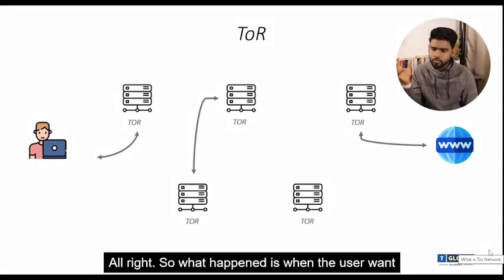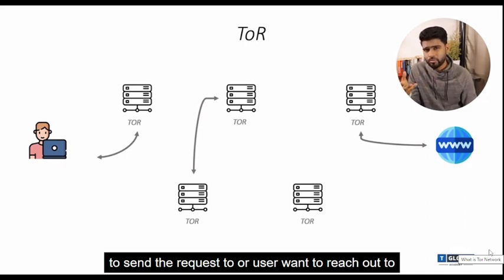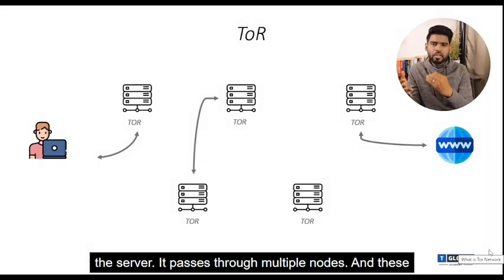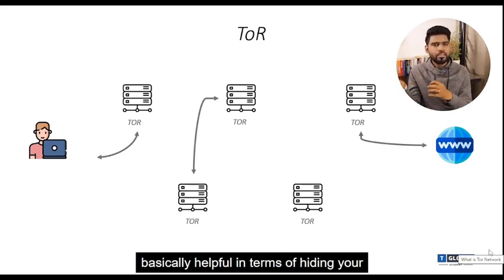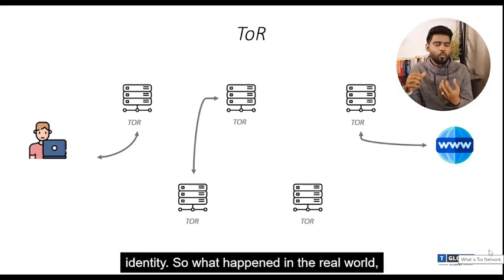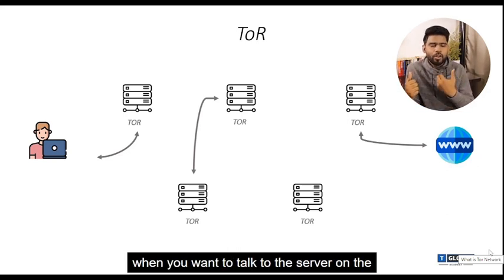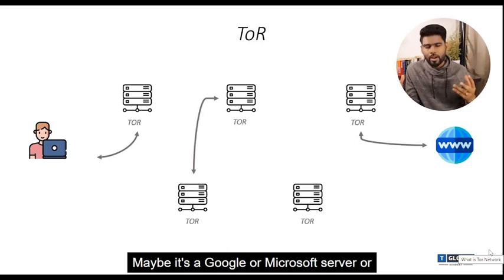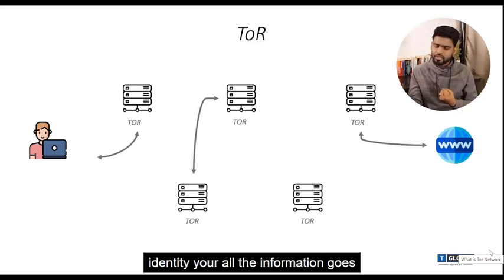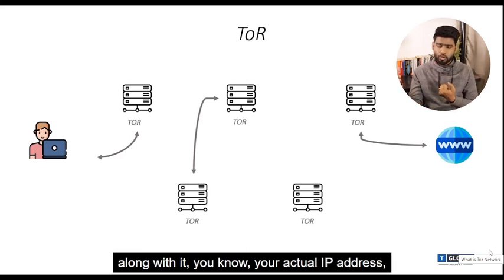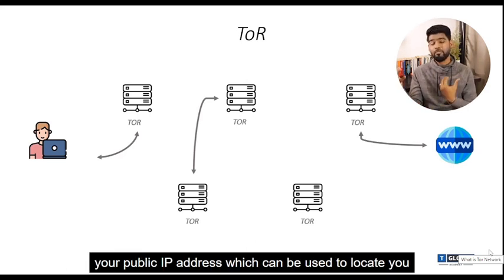When a user wants to send a request or reach out to a server, it passes through multiple nodes — these are Tor nodes — and they are helpful in hiding your identity. In the real world, when you want to talk to a server on the other side, whether it's Google, Microsoft, or Facebook, your identity and all your information goes along with it.